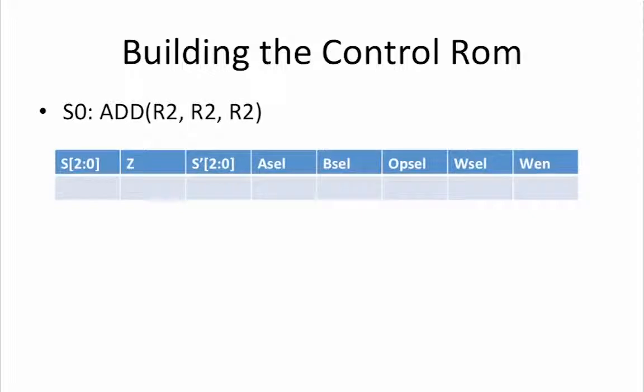We begin with state S0. In order to encode that we are in state 0 using 3 bits, we set our current state, S[2:0], to 000. In this operation, we don't care about the Z signal, so Z equals X, which means don't care. The instruction that we want to execute after this first add is the next add in state S1. This means that our next state is 001. Note that the notation S' is often used to represent the next state.